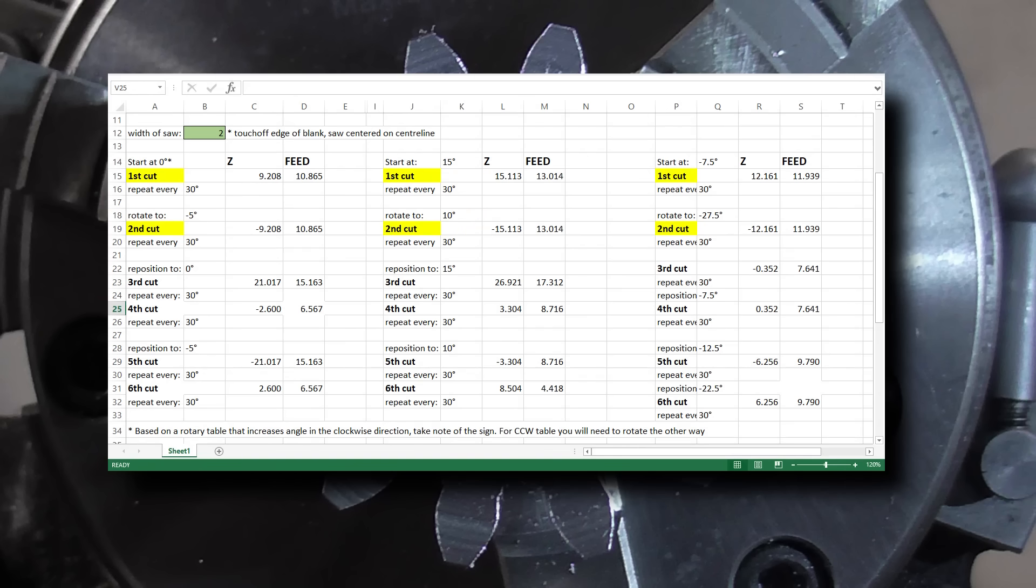If you're cutting a gear with more than about 40 teeth, these are probably all the cuts you'll need to make. But for smaller gears, after that you'll need to pick and choose cuts from lower down each column.